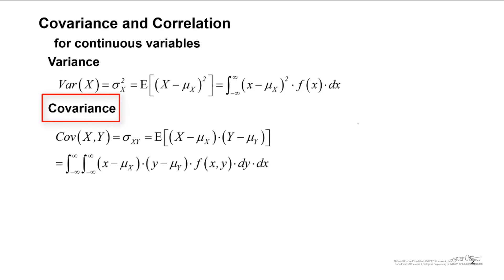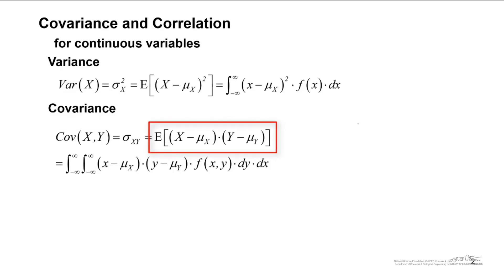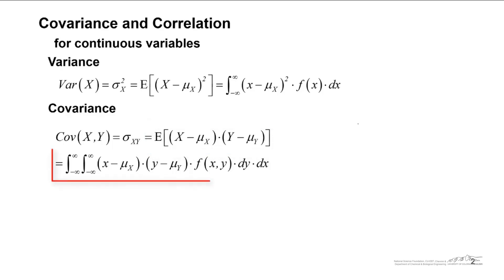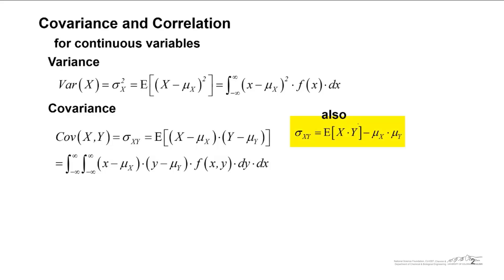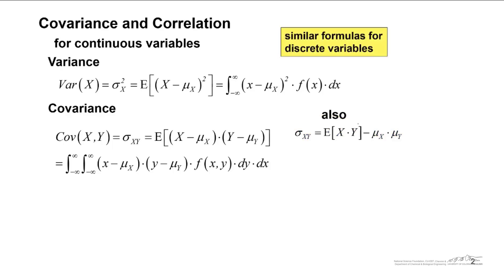We're collecting x and y — these are paired measurements. We refer to covariance as the expected value of x minus the mean of x, times y minus the mean of y. In integral form, we double integrate x minus the mean of x times y minus the mean of y times the joint probability density function f(x,y), integrating over all y and all x. You can also write this covariance as the expected value of x times y minus mu_x times mu_y, and we have similar formulas for discrete variables.